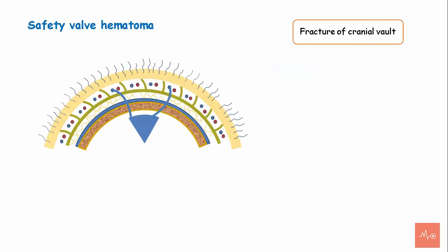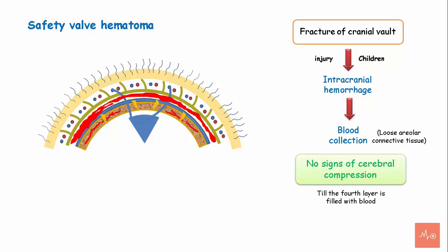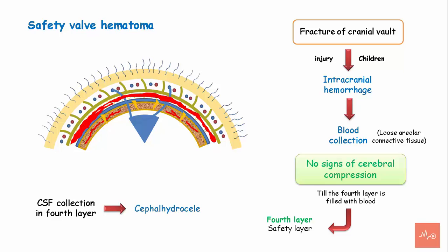Fracture of the cranial vault in children can lead to intracranial hemorrhage and blood collection in the loose areolar connective tissue. There are no signs of cerebral compression until the fourth layer is filled with blood, hence it is called the safety layer. If cerebrospinal fluid collects in the fourth layer, the condition is called cephalohydrocele.